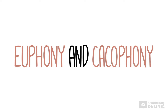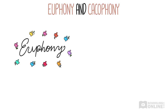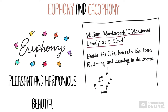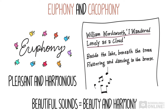To begin our lessons on the soundscape of poetry, let's look at two big ideas: euphony and cacophony. Euphony is when words sound pleasant and harmonious, like in this line from Wordsworth: 'Beside the lake, beneath the trees, fluttering and dancing in the breeze.' Poets often use beautiful sounds in their poetry to reflect the beauty and harmony of what they're describing.